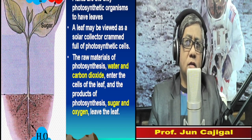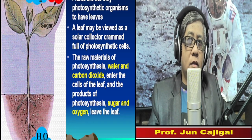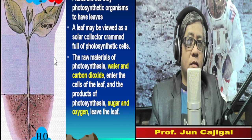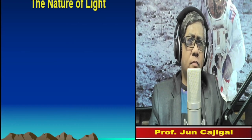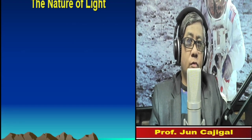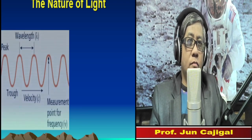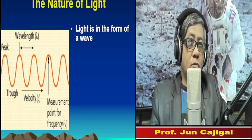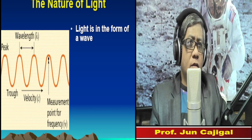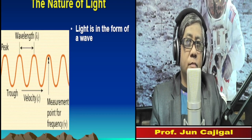Before we go into the details of the biochemistry behind photosynthesis, we need to understand the nature of light. There are several theories that explain the nature of light. One was given by Sir Isaac Newton, who mentioned that light is composed of particles, known as the corpuscular theory. There is also the idea that light is in the form of a wave, and another idea that light is composed of packets of energy called photons.